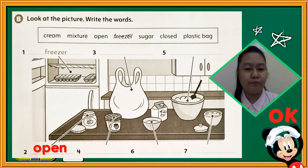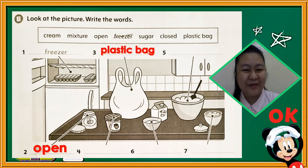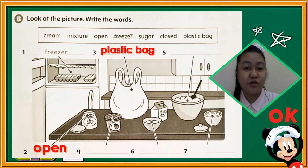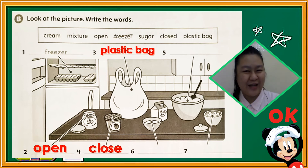The jar is open. Number 3: what's the name of this object? Plastic bag — very good. Now number 4: it's another jar — what did you notice? The jar is closed. Correct.